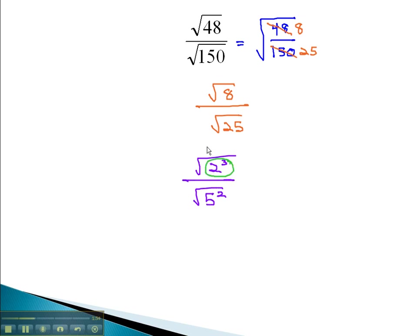The 2 to the 3rd power, dividing the exponent by the index, tells us 1, 2 comes out, and 1, 2 remains in the radical. In the denominator, the 5 squared comes out as a 5, and there's no radical remaining. We now have 2 root 2 over 5 for our final solution.